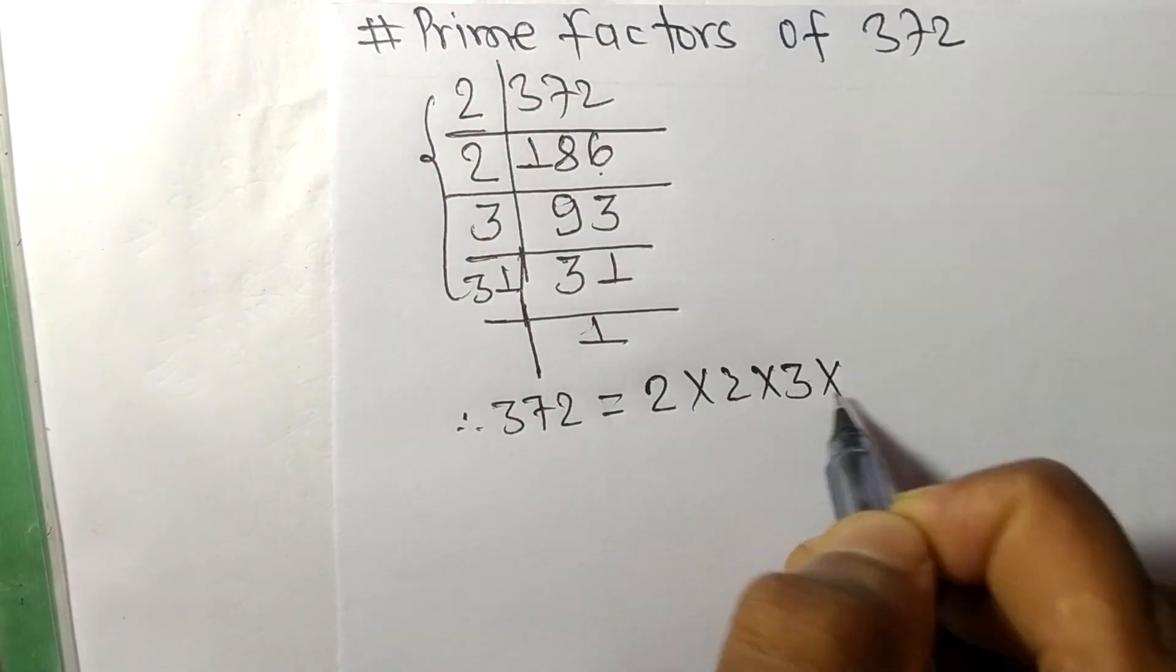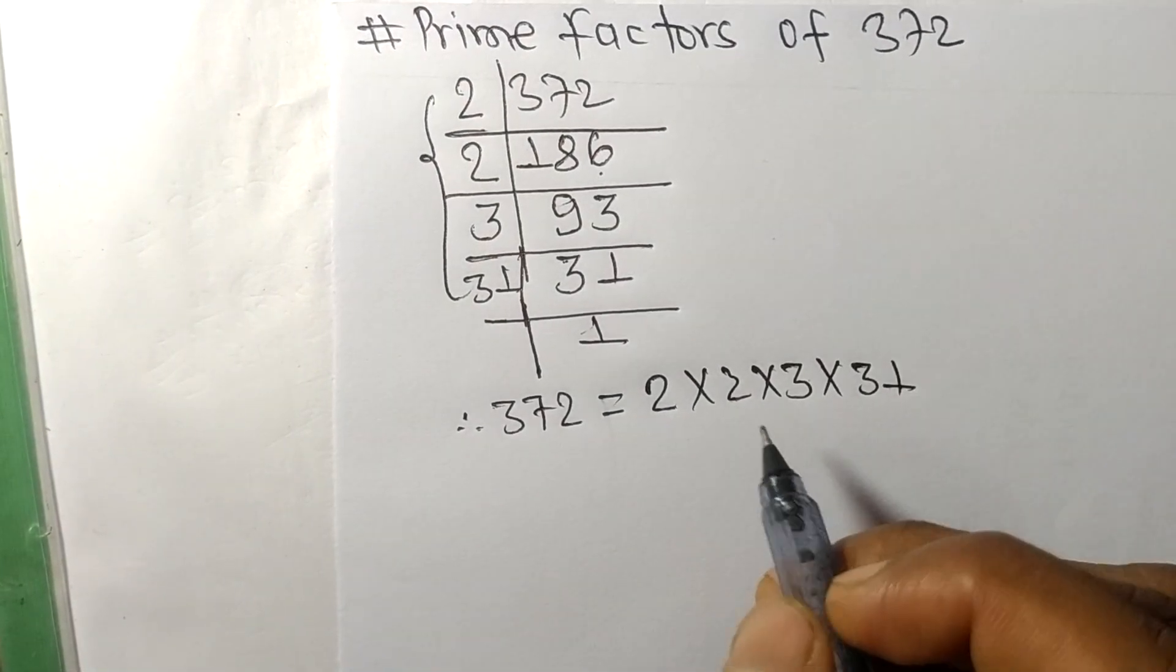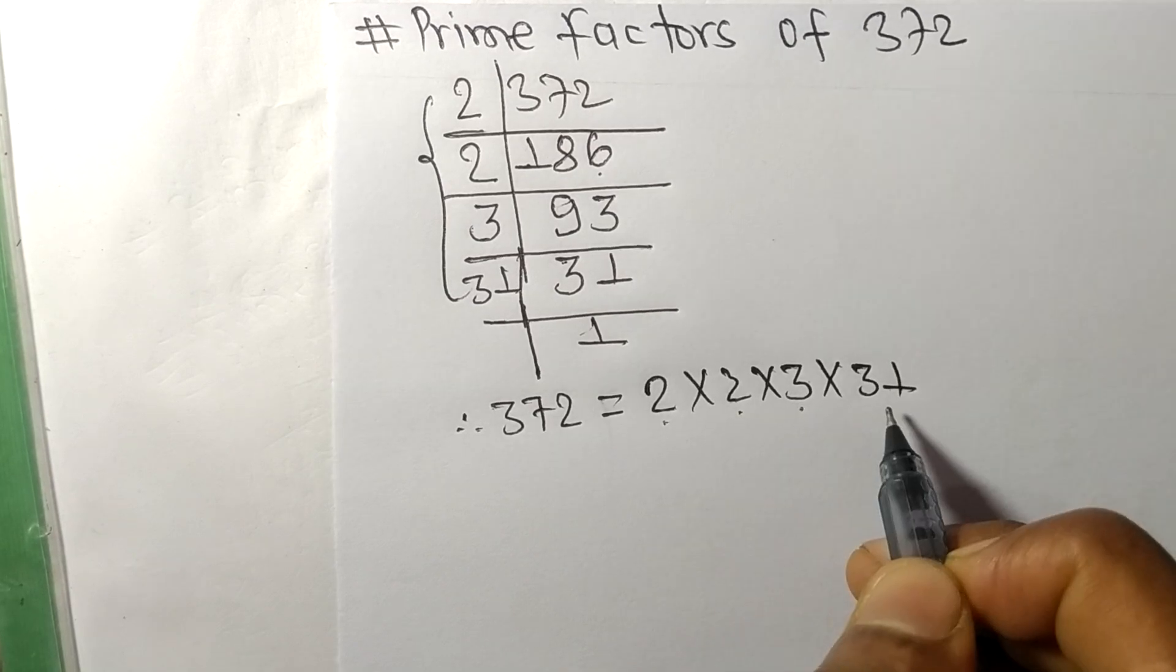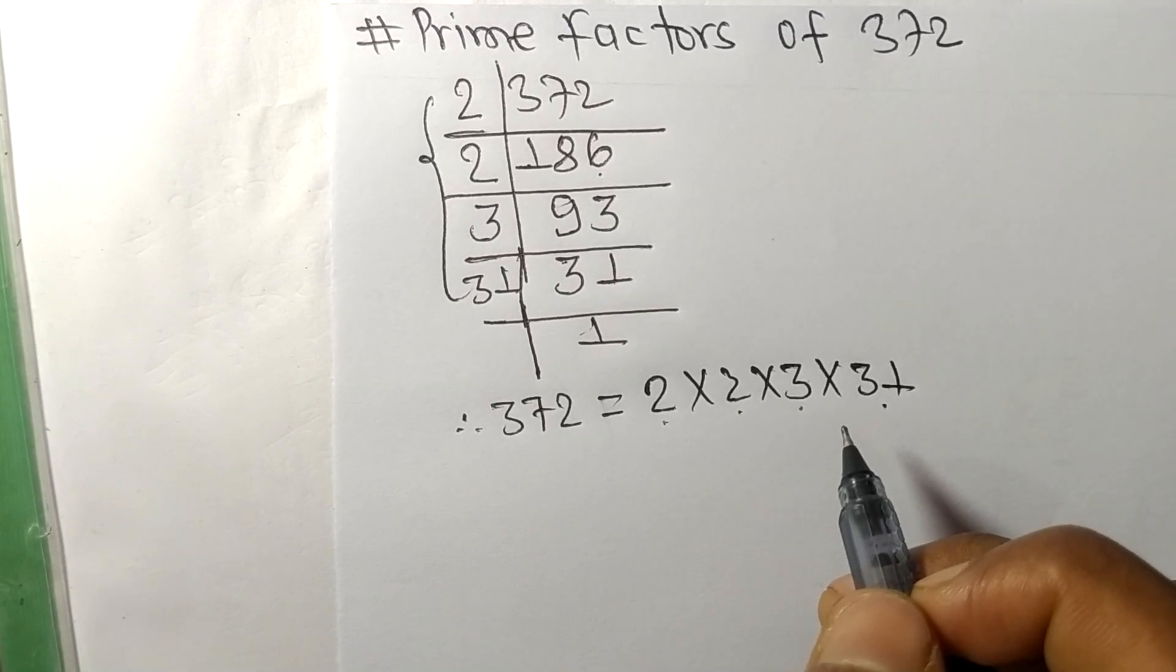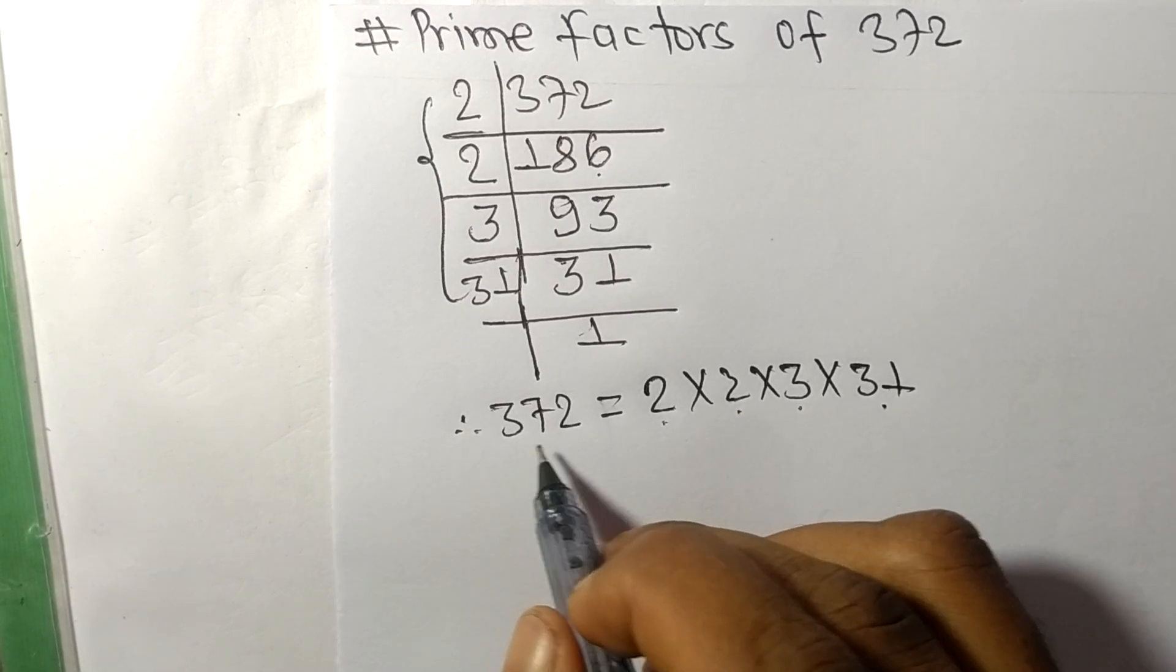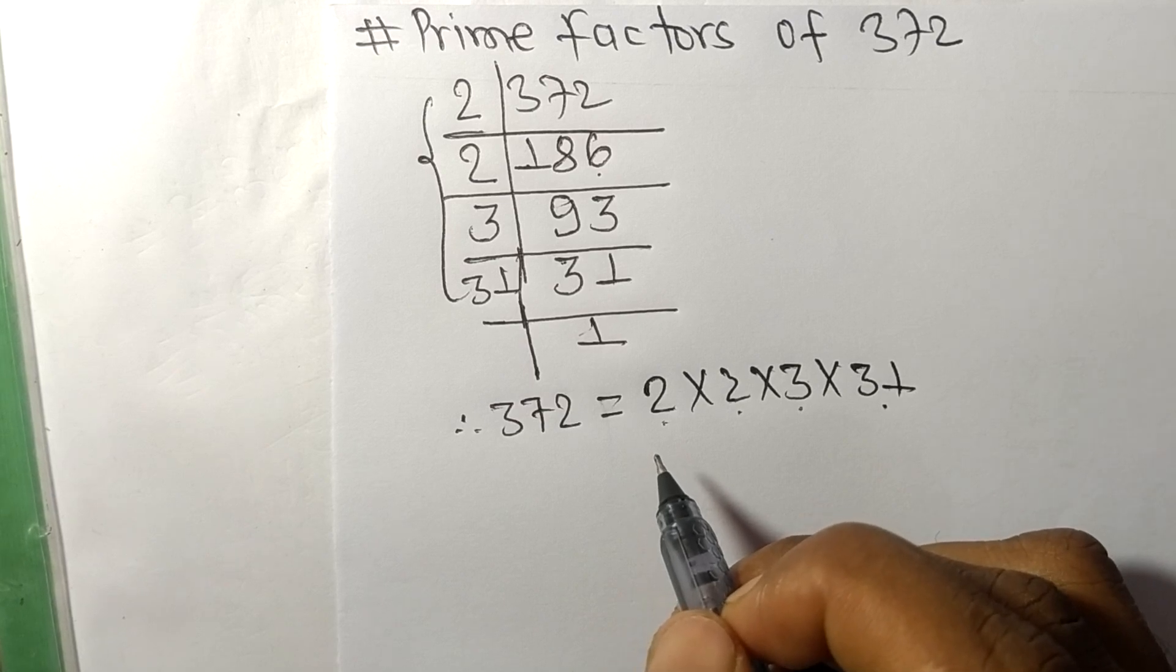So 2, 2, 3, and 31 are the prime factors of 372. So this much for today and thanks for watching.